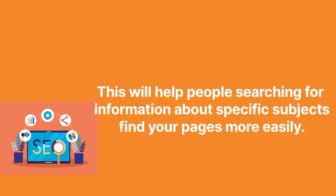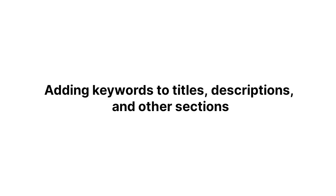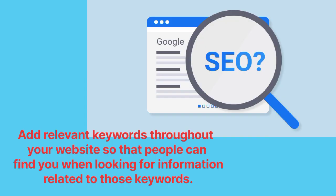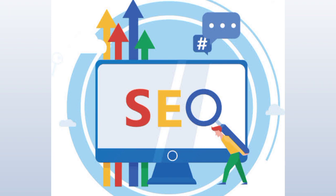Structured data — use structured data for certain types of content on your website, such as product descriptions. This will help people searching for information about specific subjects find your pages more easily. Adding keywords to titles, descriptions, and other sections — add relevant keywords throughout your website so that people can find you when looking for information related to those keywords.